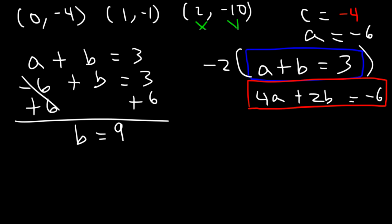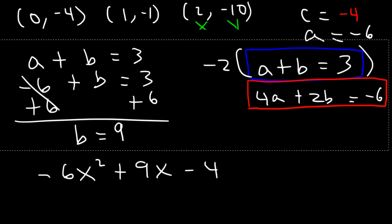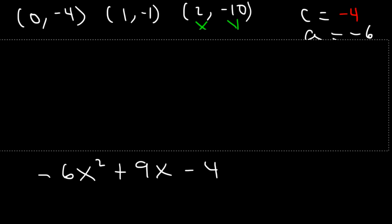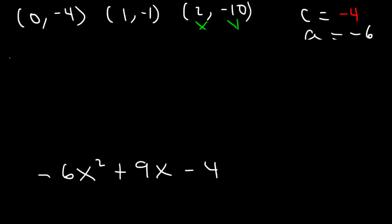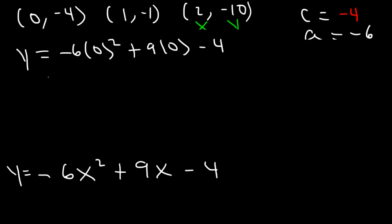So the quadratic equation is negative 6x squared plus 9x minus 4. Let's verify by checking the first point (0, -4): negative 6 times 0 squared plus 9 times 0 minus 4 equals negative 4. That checks out.